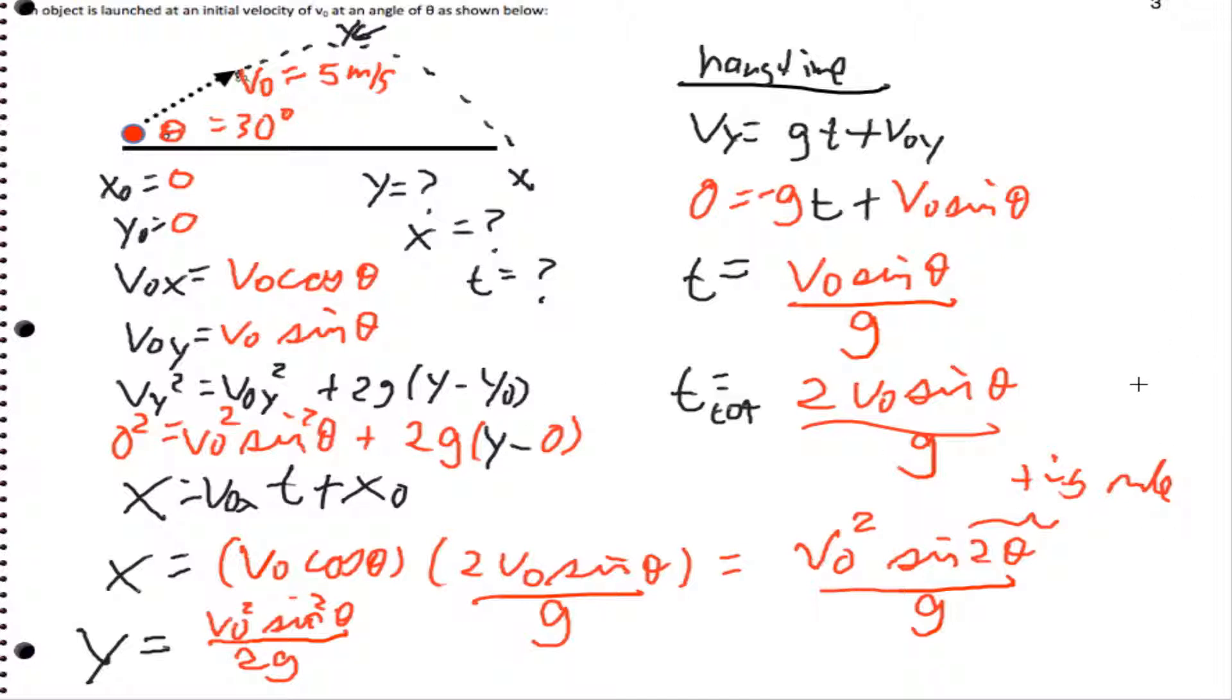So these are the two formulas that we came up with in class. So for example, if I told you that I'm launched at a speed of 5 meters per second and 30 degrees, I could immediately tell you that the maximum range I would achieve, I could actually just plug in 5 and 30. I'll leave that as an exercise to you. And you could do the same thing to get the maximum height. So that's why these formulas are so powerful, and these would both be given to you on your exam.